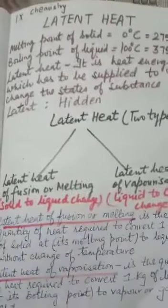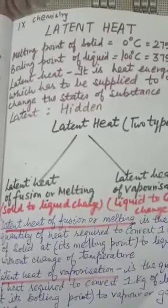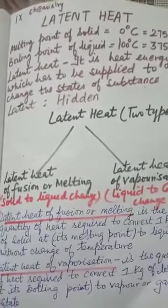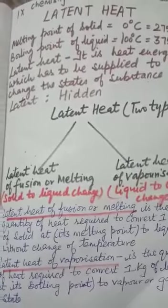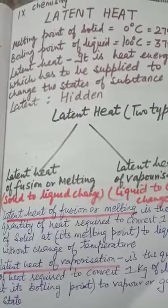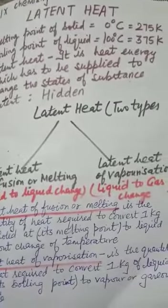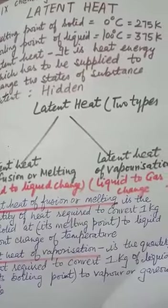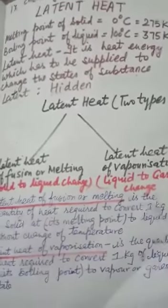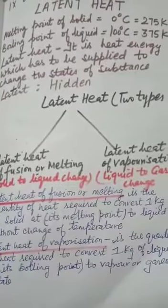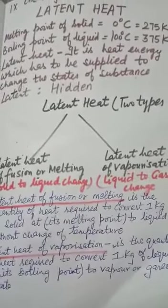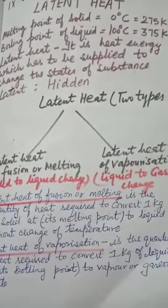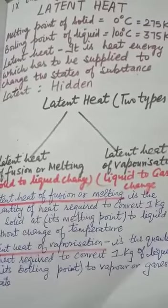Good morning class, today I am going to explain you about latent heat. Already we know that the melting point of solid is 0 degree Celsius which is equal to 275 Kelvin. The boiling point of liquid is 100 degree Celsius which is equal to 375 Kelvin.